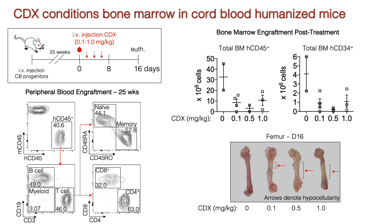We then wanted to test the conditioning potential of CDX. Humanized mice were generated by transplantation of human cord blood-derived CD34-positive HSPCs. The mice showed stable multilineage engraftment with significant populations of T cells at 25 weeks. Mice were treated intravenously with three doses of CDX at varying concentrations or left untreated, and euthanized 16 days after starting treatment to assess conditioning in the bone marrow. Total human engraftment in the bone marrow was reduced, and specifically, CD34-positive HSCs were depleted at all doses.